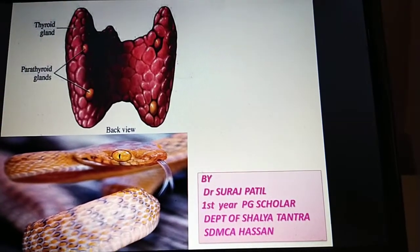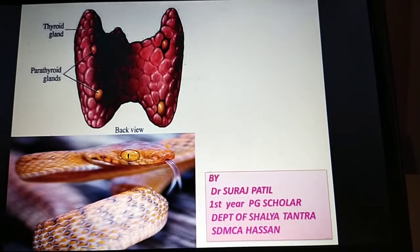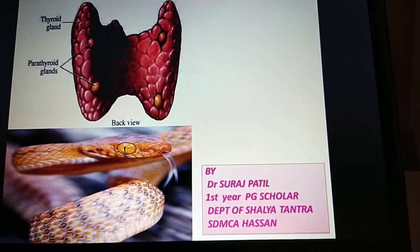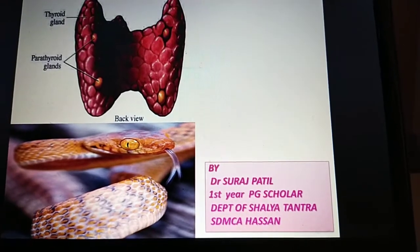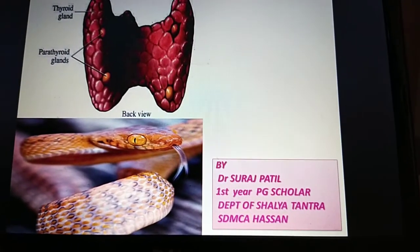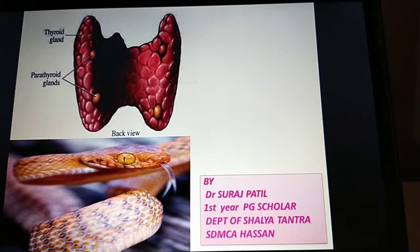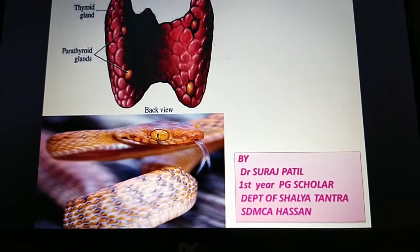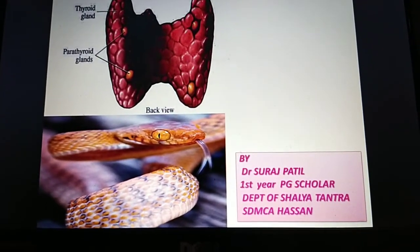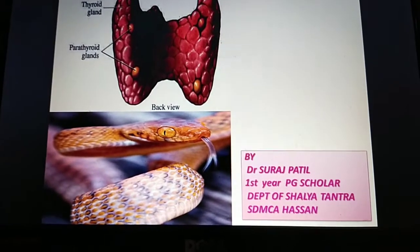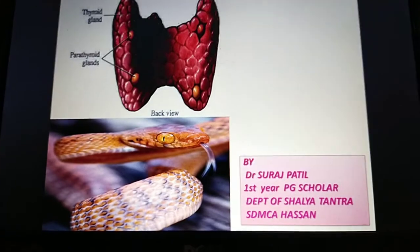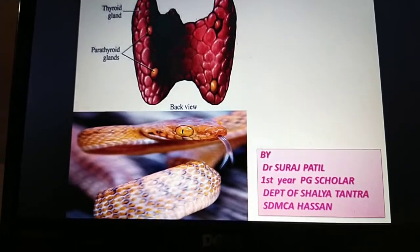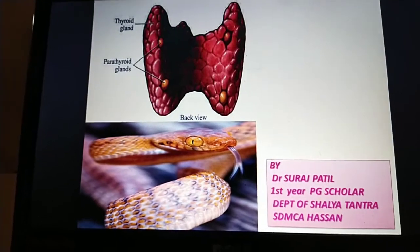Good morning everyone. Today we will discuss the anatomy of the parathyroid gland. Last class we discussed the anatomy of the thyroid gland. The name 'para' comes from a Greek word meaning beside, at the side of, or next to. The parathyroid gland is named so because it is beside or beyond the thyroid gland.